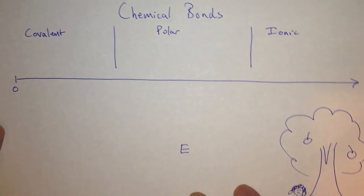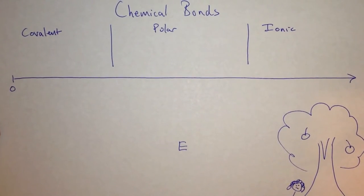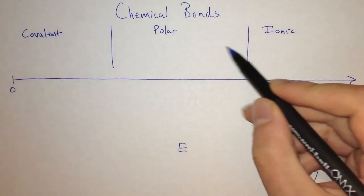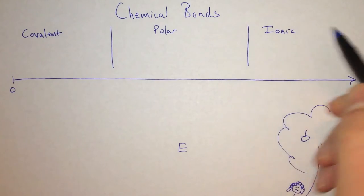But first, we need to talk about the types of chemical bonds. There are three kinds: covalent, polar, and ionic. Each one is different.